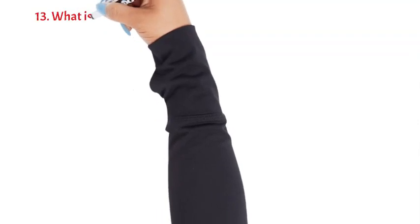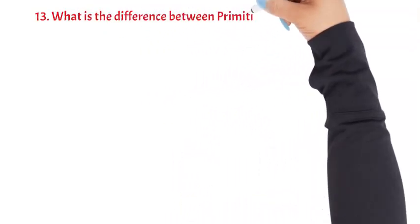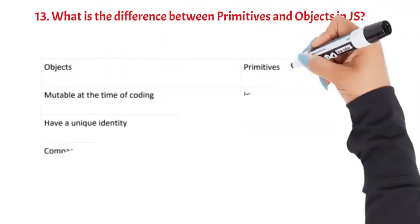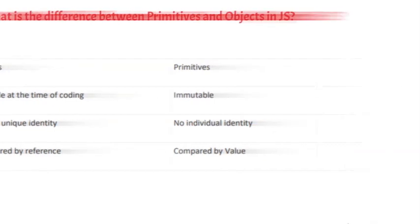Question 13: What is the difference between primitives and objects in JavaScript? 1. Objects are mutable at the time of coding; primitives are immutable. 2. Objects have a unique identity; primitives have no individual identity. 3. Objects are compared by reference; primitives are compared by value.